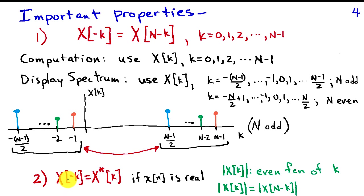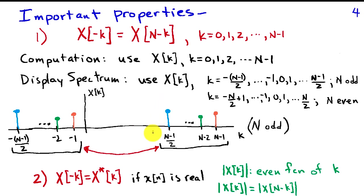Another property is that X of minus k equals the complex conjugate of X of positive k, so the DFT coefficients have conjugate symmetry — values at negative frequencies are the conjugates of those at positive frequencies. This implies that the magnitude spectrum |X of k| is an even function of k, and that the magnitude spectrum at k is the same as at N minus k. The first portion of the magnitude spectrum is therefore identical to the portion from (N minus 1)/2 up to N minus 1. This conjugate symmetry property holds whenever x of n is real.